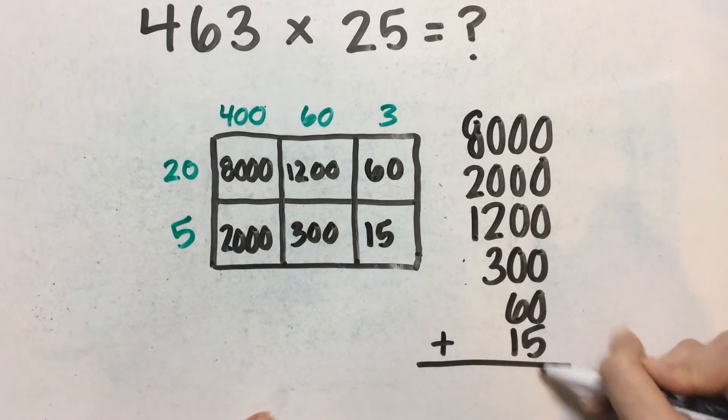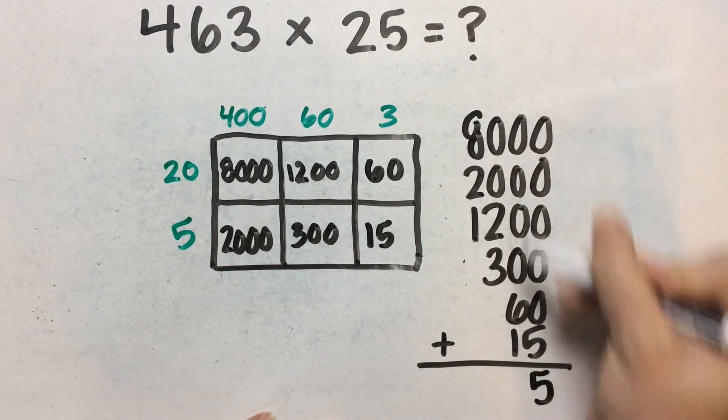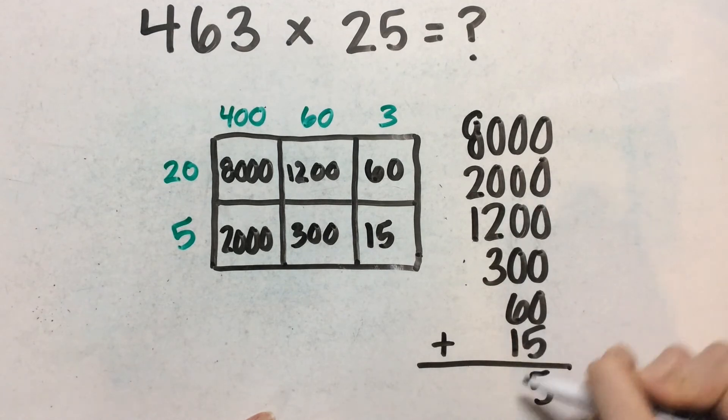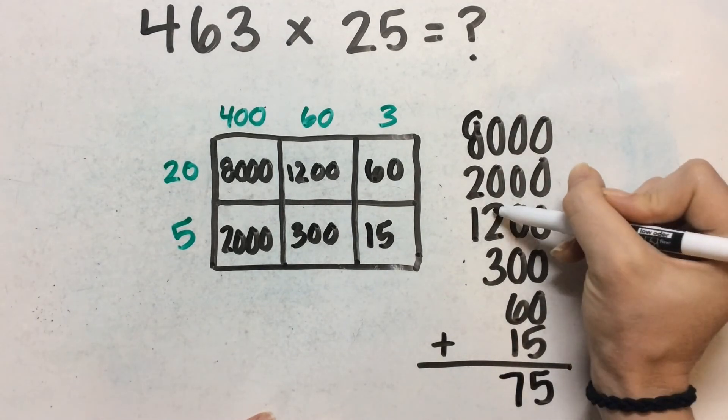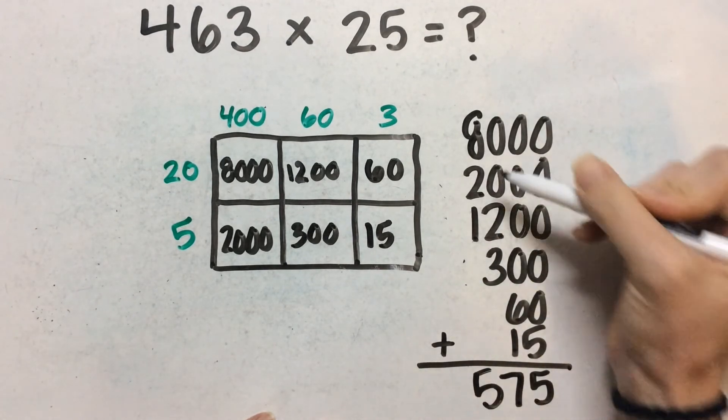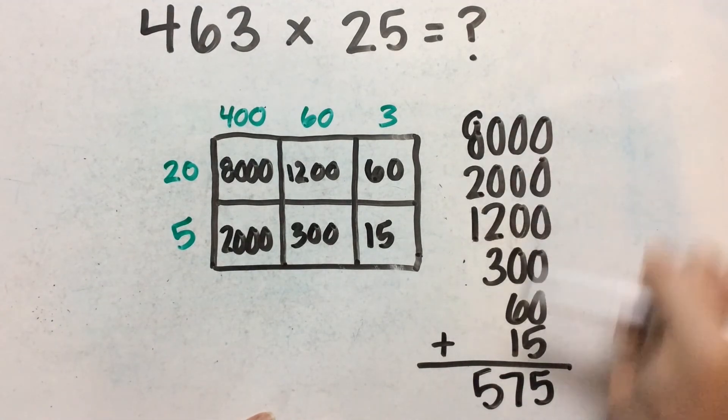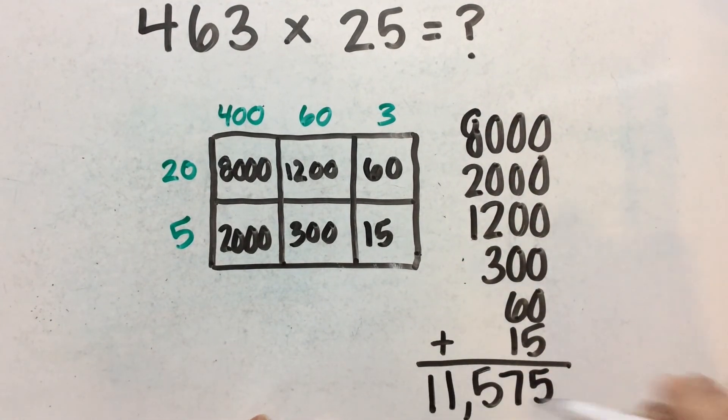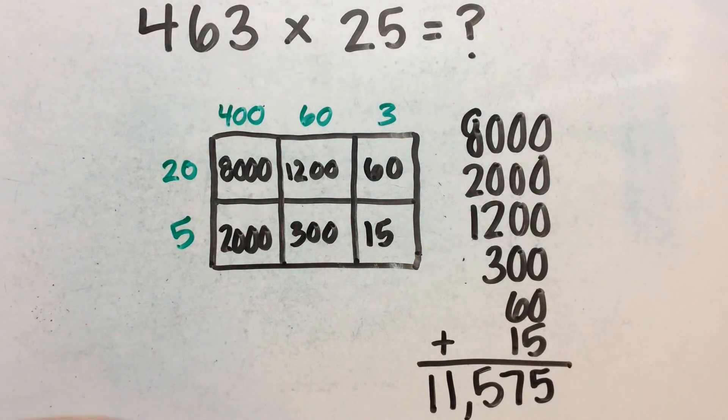So now zero, zero, zero, zero, zero, zero plus five is five. Zero plus six and one is seven. Two plus three is five. And then eight, nine, 10, 11. And that checks out. We got the same answer.